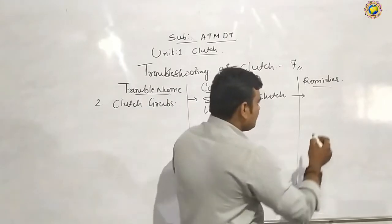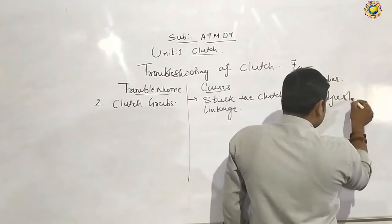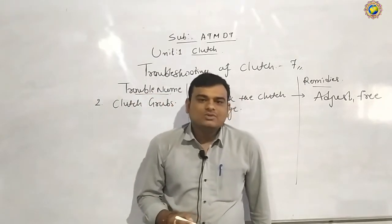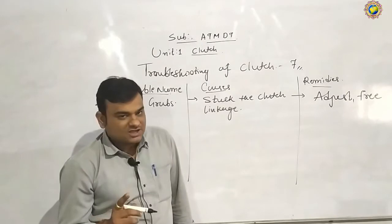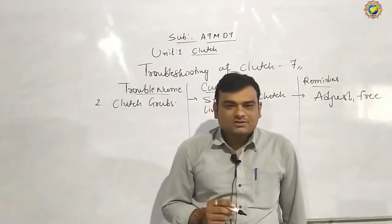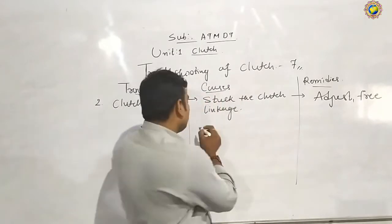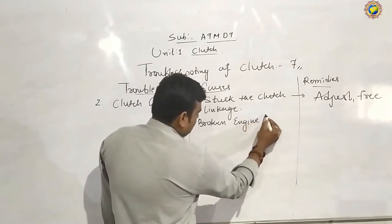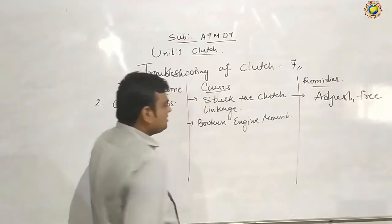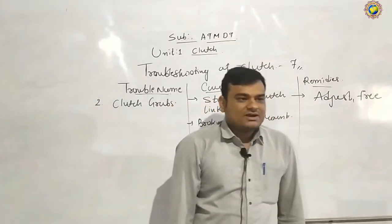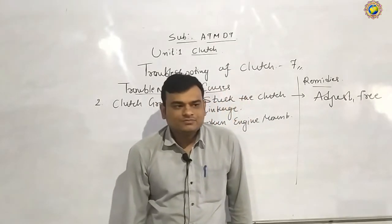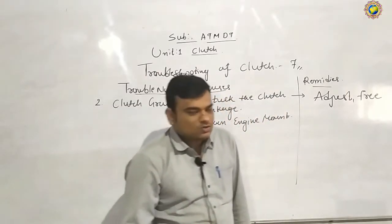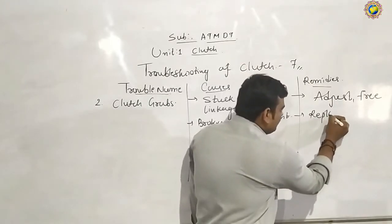For the causes and remedies of clutch grab: first, you need to properly adjust and free the clutch linkage — properly lubricate and adjust to make it free. The second reason is a broken engine mount. The remedy is to replace the broken engine mount. For every trouble, you need a minimum of 3 to 4 causes and remedies.